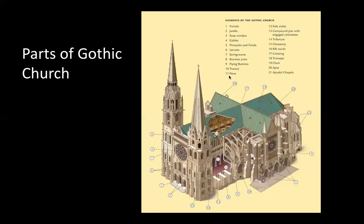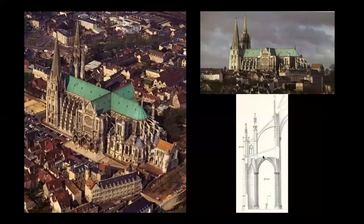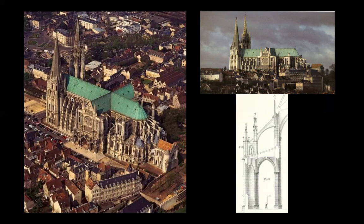There are lots of pinnacles and finials — all vertical elements with spiky sorts of shapes in Gothic architecture that force your eye up towards the heavens. The flying buttresses come out from the ceiling and go down; you can see how thick that masonry is. Even in the apse area, this allows for large windows: basically between each buttress you're going to have large stained glass windows.